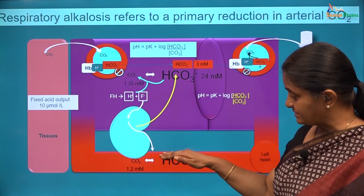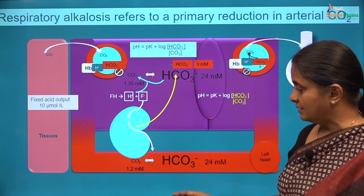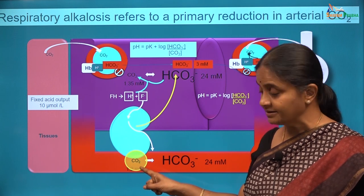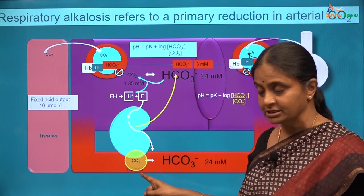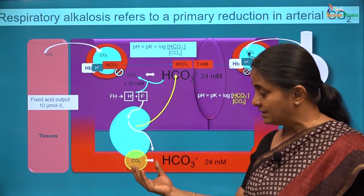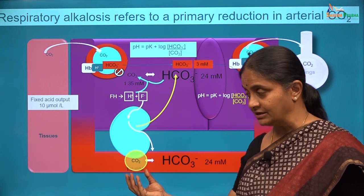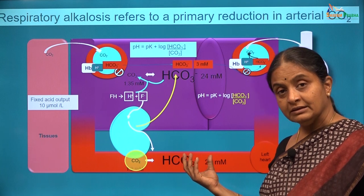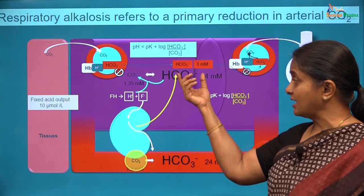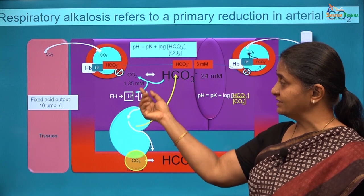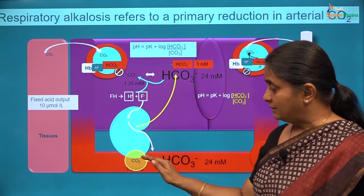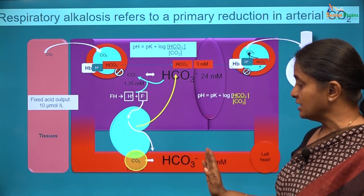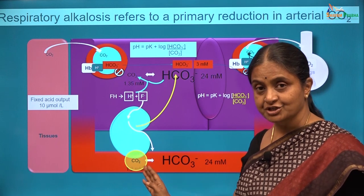Respiratory alkalosis is a condition where there is a primary reduction in arterial carbon dioxide. Normally, it is at 1.2 millimoles per liter or 40 millimetres mercury. That carbon dioxide can be thought of as a repository which is there to balance the bicarbonate that is there in plasma, the bicarbonate being there to buffer the fixed acids. The amount of carbon dioxide in arterial blood is precisely regulated by the lungs so as to keep the pH at 7.4.